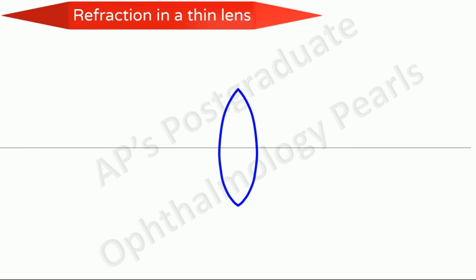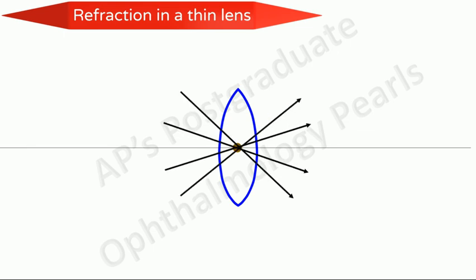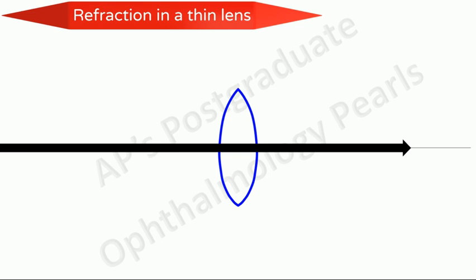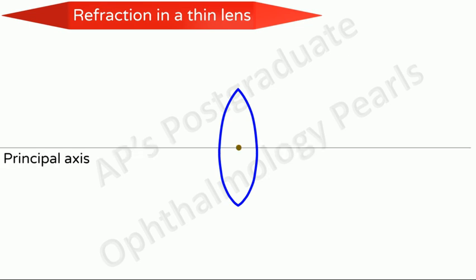We shall first consider refraction in a thin lens. The optical centre of a lens is that point in the lens which causes all rays that pass through it to be undeviated. It need not correspond to the geometric centre of the lens. A central ray of light striking the lens transversely does not get refracted but passes through undeviated. The line corresponding to this central ray is called the principal axis of the lens.